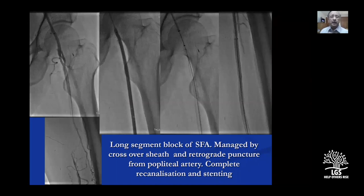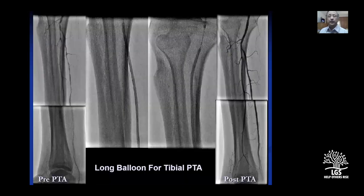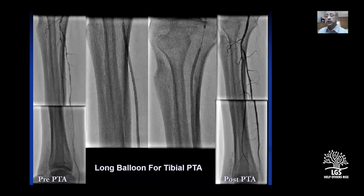For long lesions, different techniques are used. A retrograde puncture of the popliteal artery allows the wire to be pushed up, retrieved from above, and the entire lesion dilated and stented — thereby avoiding femoral-popliteal bypass. For tibial arteries, long balloons can dilate the entire length of a tibial artery with a single balloon. All three vessels — peroneal, anterior tibial, and posterior tibial — can be dilated, improving blood flow to the target area, the foot, to promote healing of foot lesions.